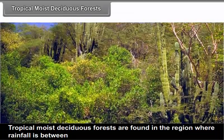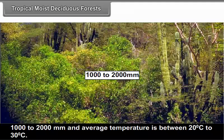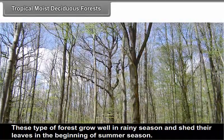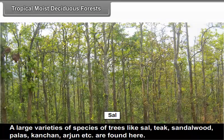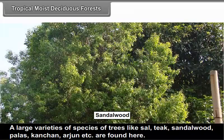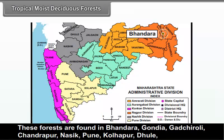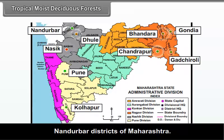Tropical moist deciduous forests are found in regions where rainfall is between 1000 to 2000 mm and average temperature is between 20°C to 30°C. These forests grow well in the rainy season and shed their leaves at the beginning of summer. They grow as tall as 30 to 40 meters. A large variety of tree species like sal, teak, sandalwood, paras, kanchan, arjun, etc. are found here. These forests are found in Bhandara, Gondiya, Gadchiroli, Chandrapur, Nashik, Pune, Kolhapur, Dhule and Nandurbar districts of Maharashtra.